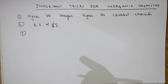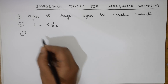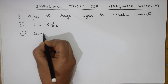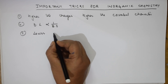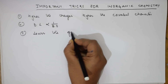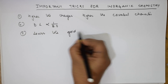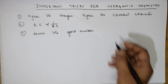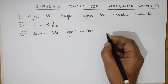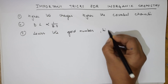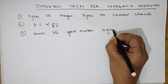The third important thing is very important for the gold number concept. If you have a gold number question, remember: lower the gold number, higher is the protective power.